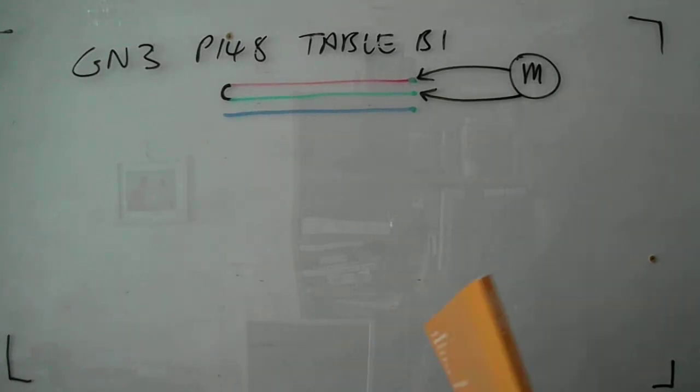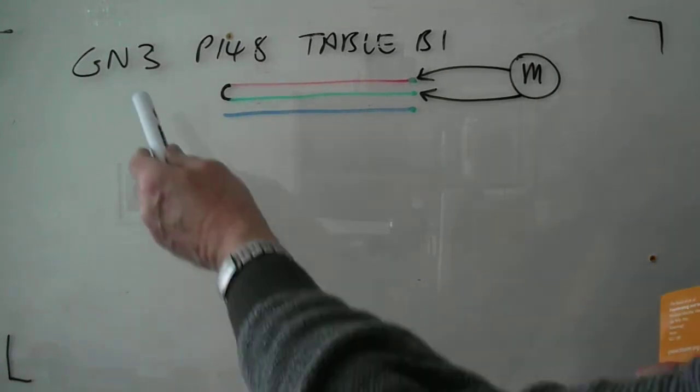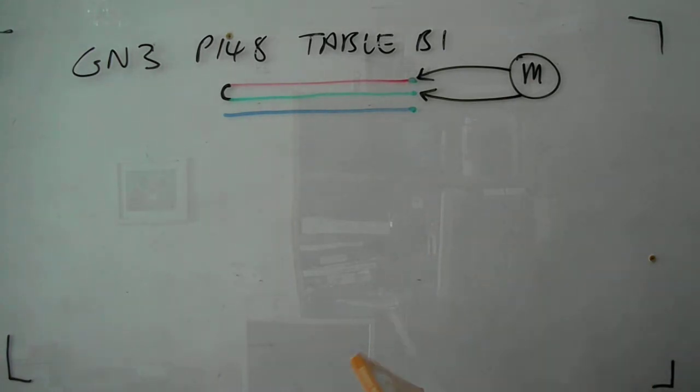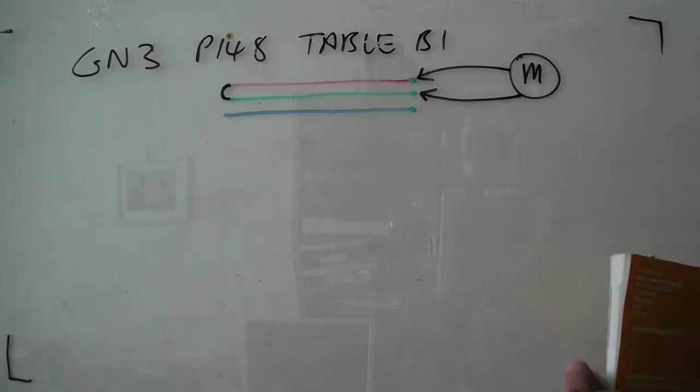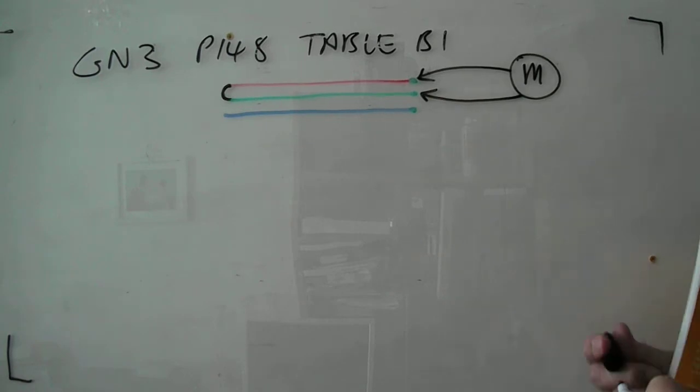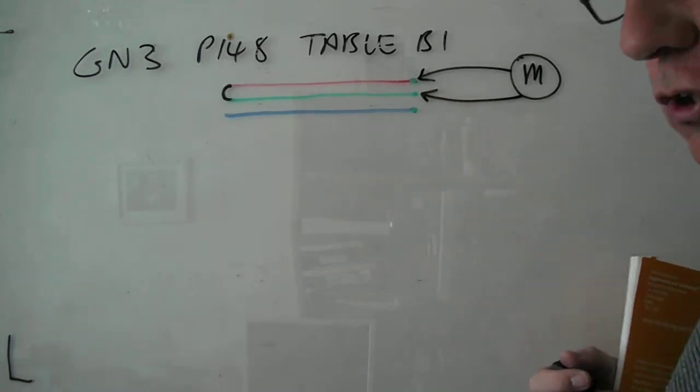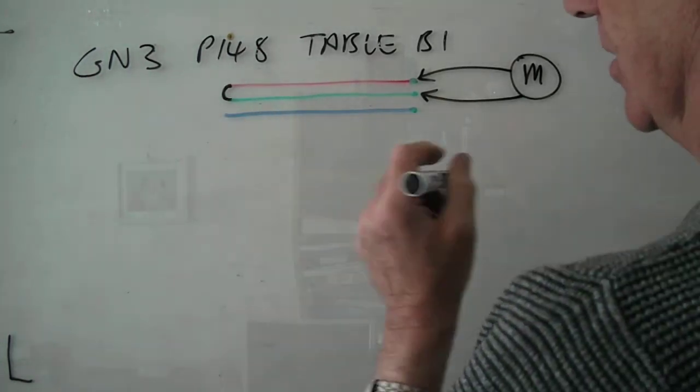Hello again, what we're going to do now is go back to GN3 page 148 in table B1 and we're going to look at trying to work out the resistance of a piece of twin and earth cable.